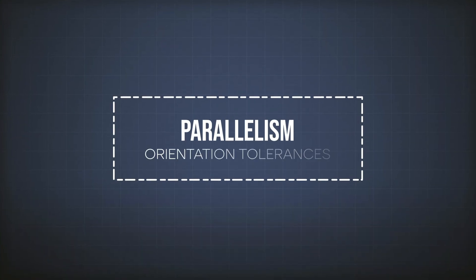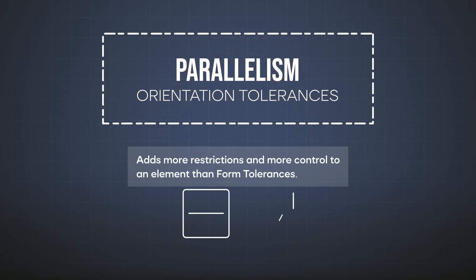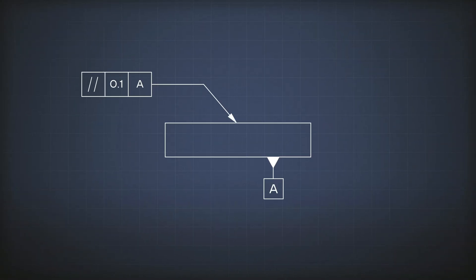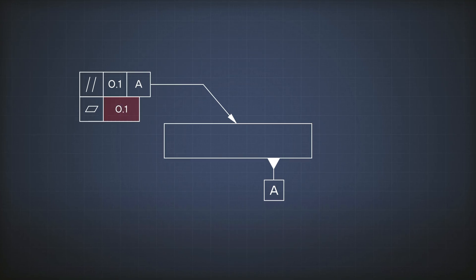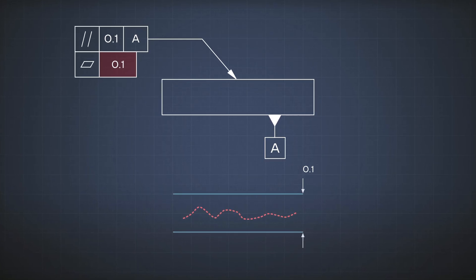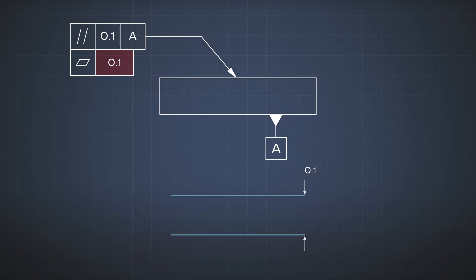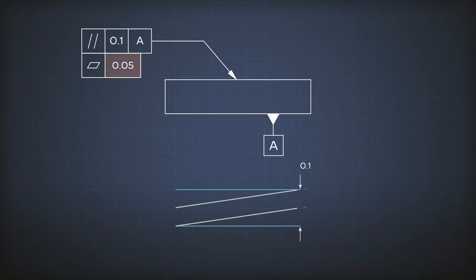Parallelism, and orientation tolerances in general, add more restrictions and control to an element than form tolerances such as straightness and flatness. So you cannot put a parallelism tolerance of 0.1 on an element and also a flatness or straightness tolerance with the same value or a greater value, because then the flatness or straightness becomes useless. What you can do is add a parallelism of 0.1 and also require the surface to be flat with 0.05 — this is okay, because you're adding more restriction for flatness. The value of parallelism always has to be greater than the value of the form tolerance.